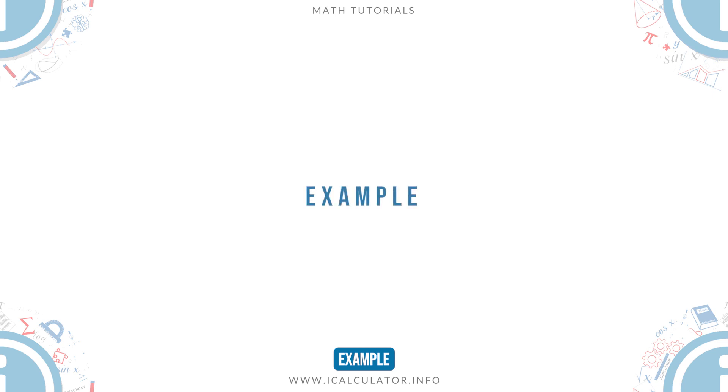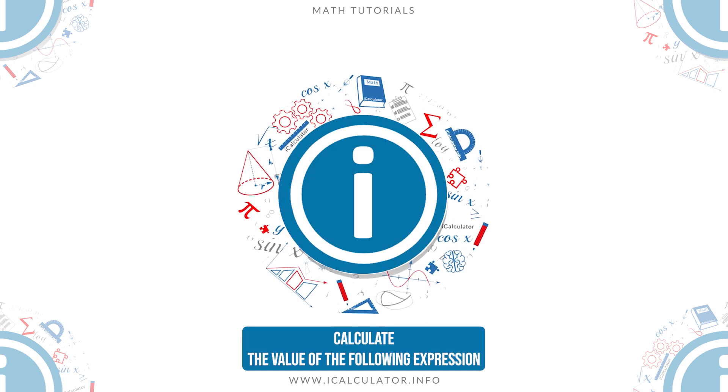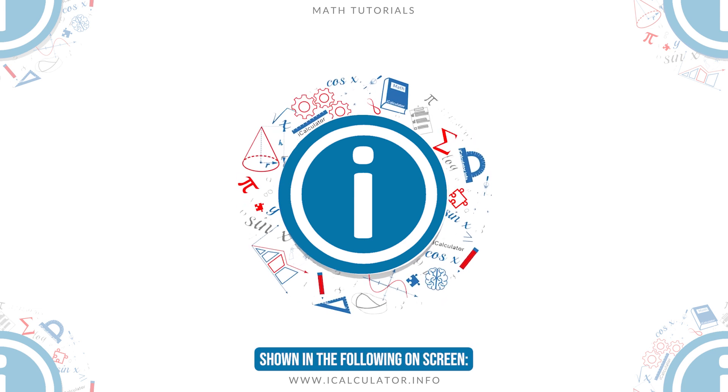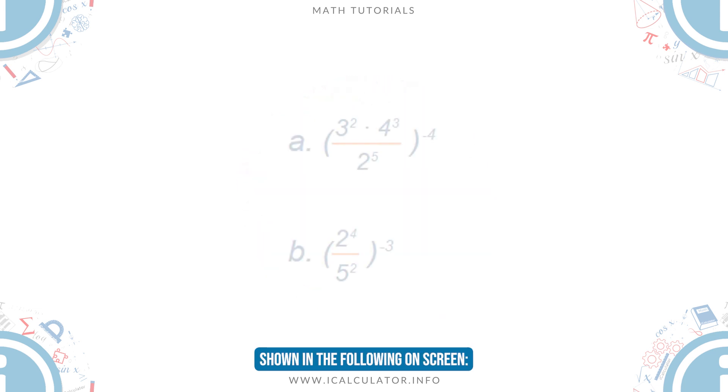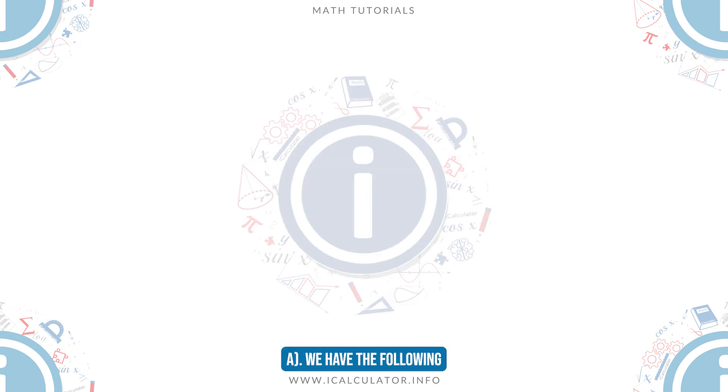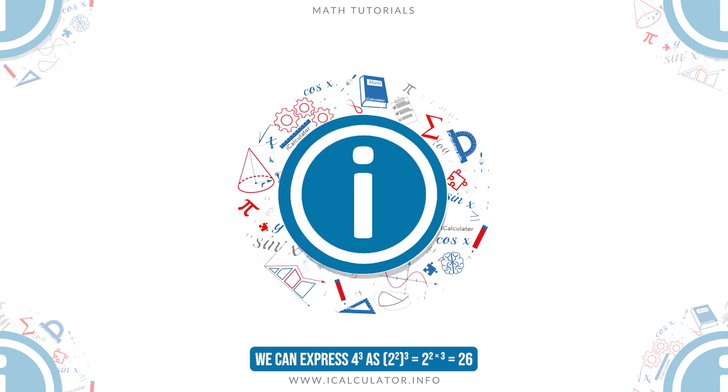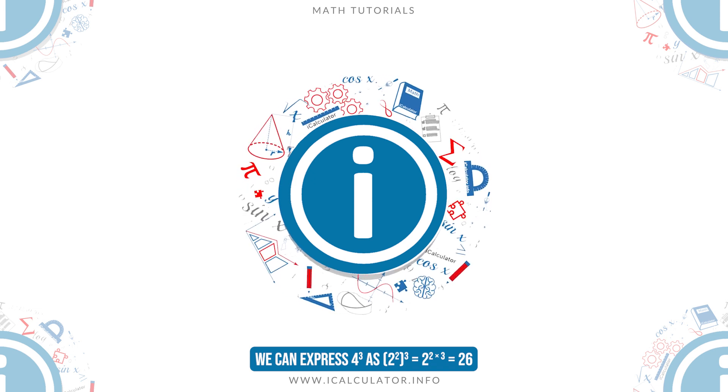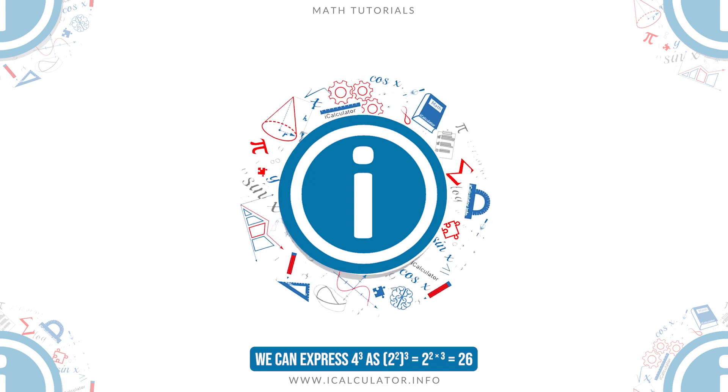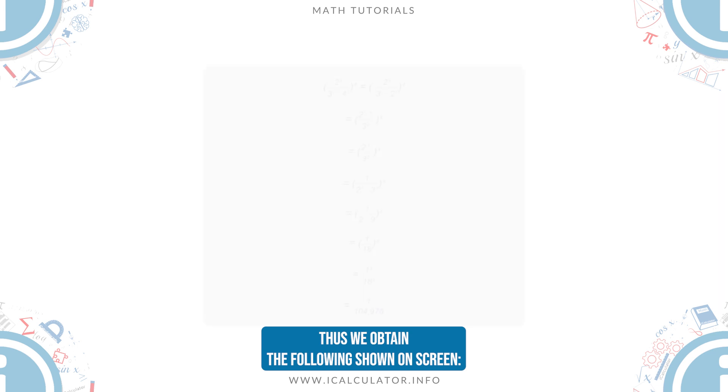Example: Calculate the value of the following expressions shown on screen. We can express 4³ as (2²)³ = 2⁶. Thus, we obtain the following shown on screen.